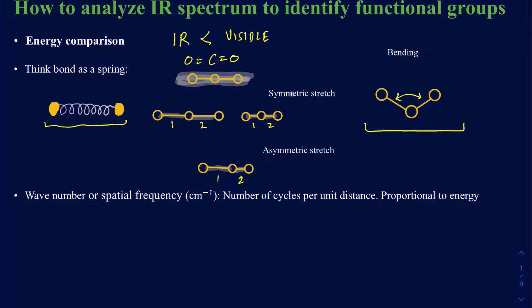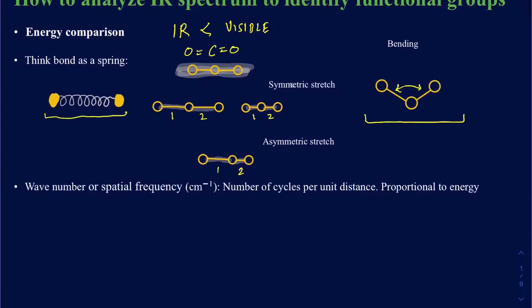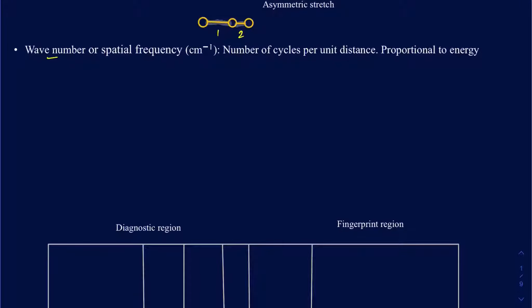Let's talk about how you really read and measure the frequency in the IR spectrum. The wave number, also called the spatial frequency, is not the same frequency measured in hertz — it's measured in centimeters inverse, and talks about the number of cycles per unit of distance. This wave number has the symbol nu-bar, and it equals 1 over the wavelength (1/λ), or equivalently, frequency divided by the speed of light.